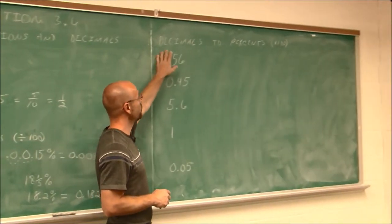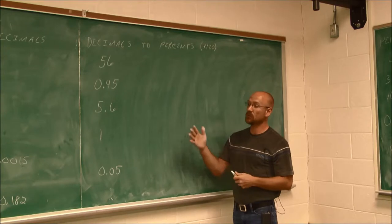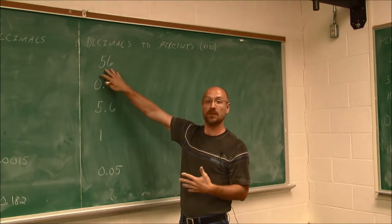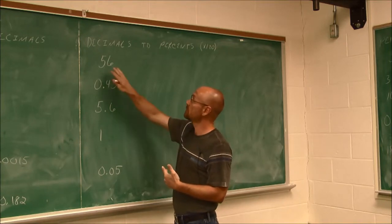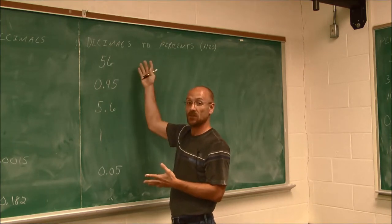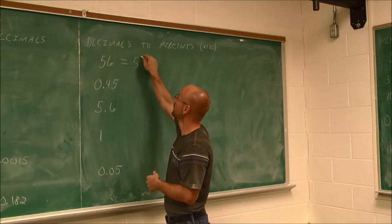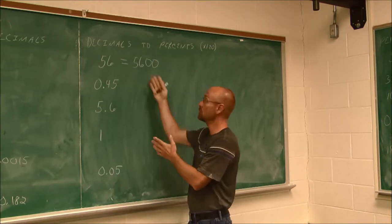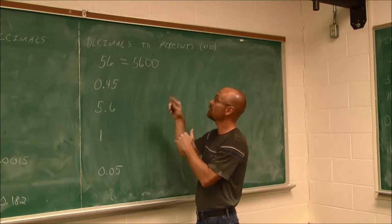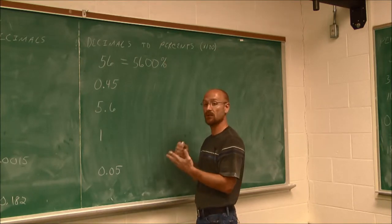Now let's look at converting a decimal to a percent — we're going the other way. Instead of dividing by 100, we're going to multiply by 100. Multiplying by 100 means we move the decimal two spots to the right. For example, what percent increase is 56 times? To convert, we multiply by 100, giving us 5,600%.